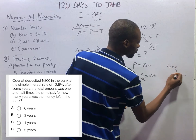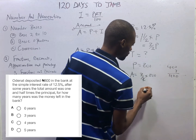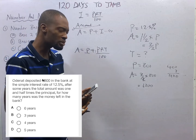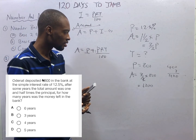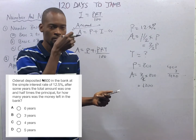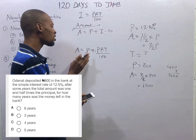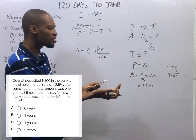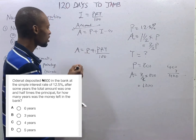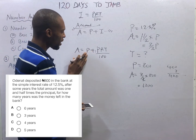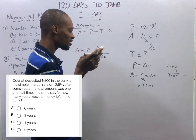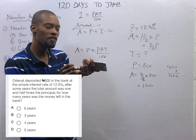So amount is N1,200, principal is N800, time is unknown, and rate is 12.5%. From our formula, amount = principal + interest, and interest = principal × rate × time / 100. Amount is given, principal is given, rate is given — substitute, make time the subject, and solve. That should give you 4 years if you solve correctly.